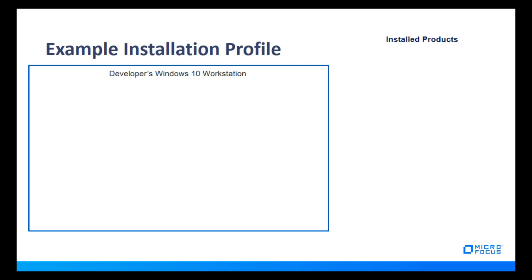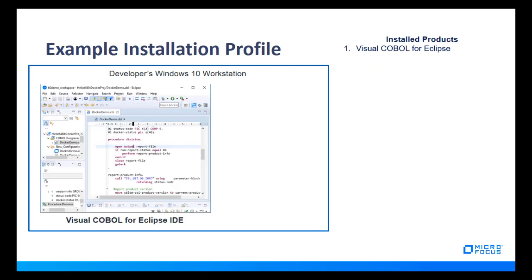As a review from the video on Installing Visual COBOL Build Tools, let's quickly look at an example installation profile for using Visual COBOL for Eclipse in conjunction with Docker containers. First, the Visual COBOL for Eclipse product must be installed on the developer's workstation. Second, the appropriate Docker product should be installed on the workstation. This example is on Windows 10, where the features shown require Docker Desktop, sometimes called Docker Community Edition for Windows.